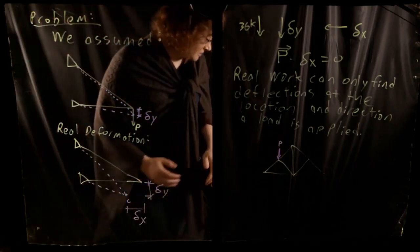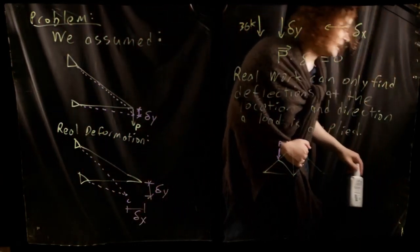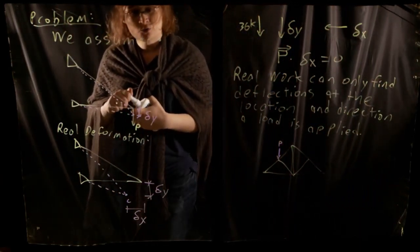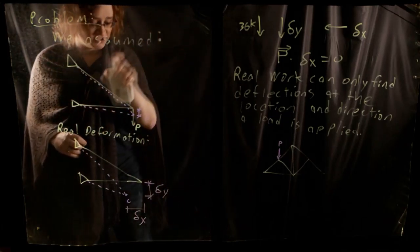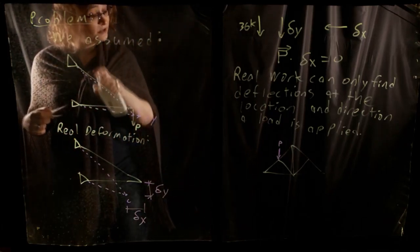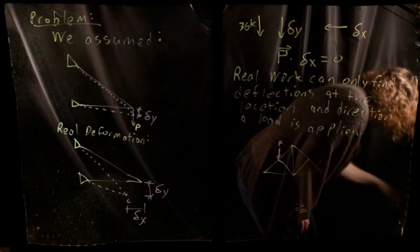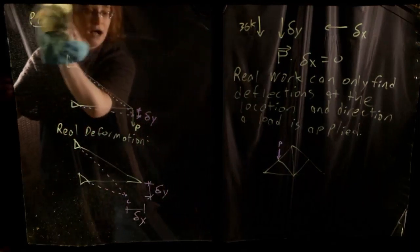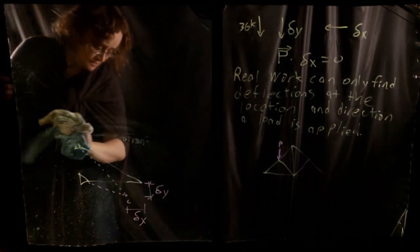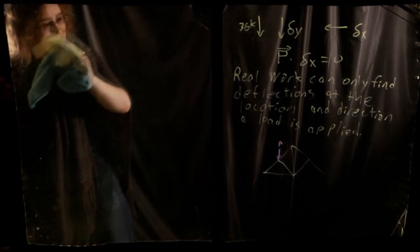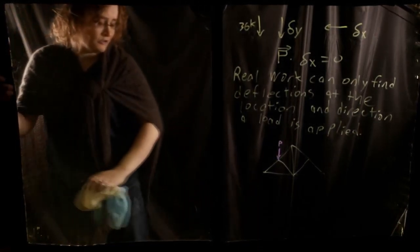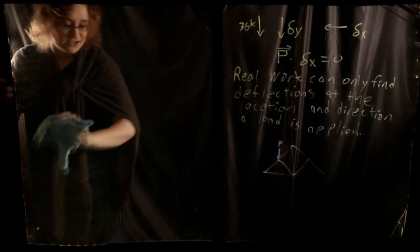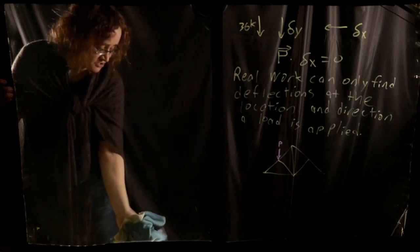The method of virtual work is one of our most powerful tools in structural analysis when seeking to analyze the deflections of statically determinate structures. For trusses it is primarily useful for statically determinate structures, though you can combine it with compatibility to help solve statically indeterminate systems. Today we'll focus on basic statically determinate trusses.